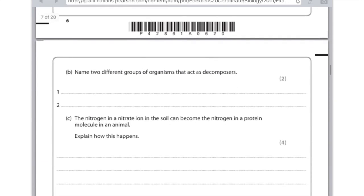B, name two different groups of organisms that act as decomposers. Hopefully you could guess this even if you're not totally sure. That is bacteria and fungi.